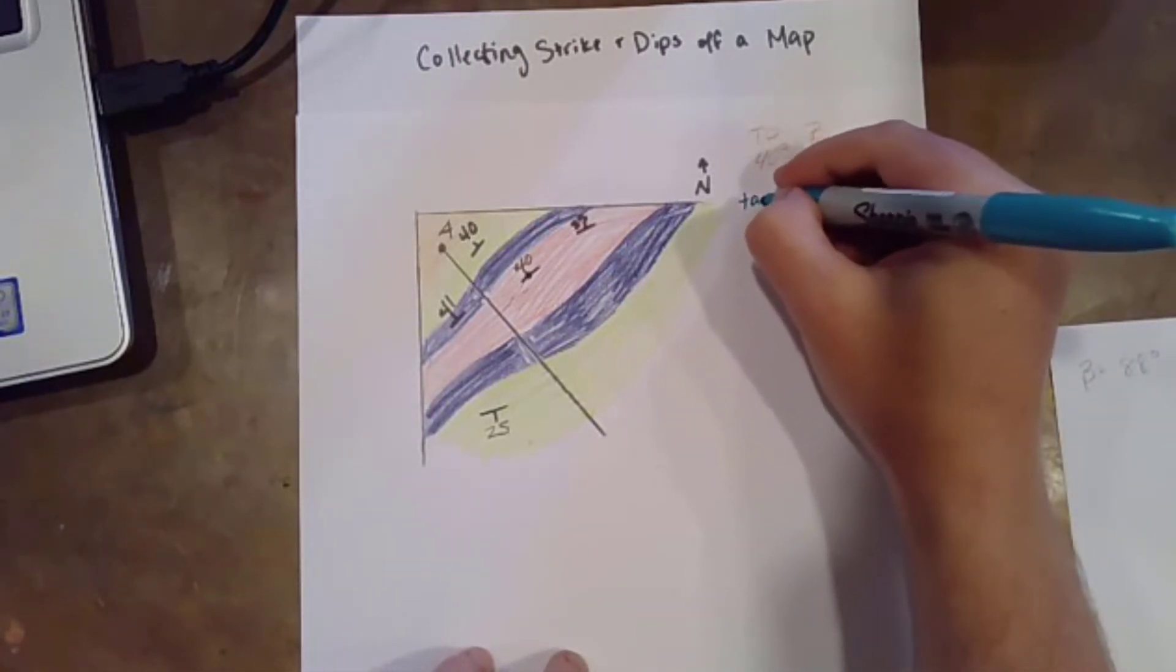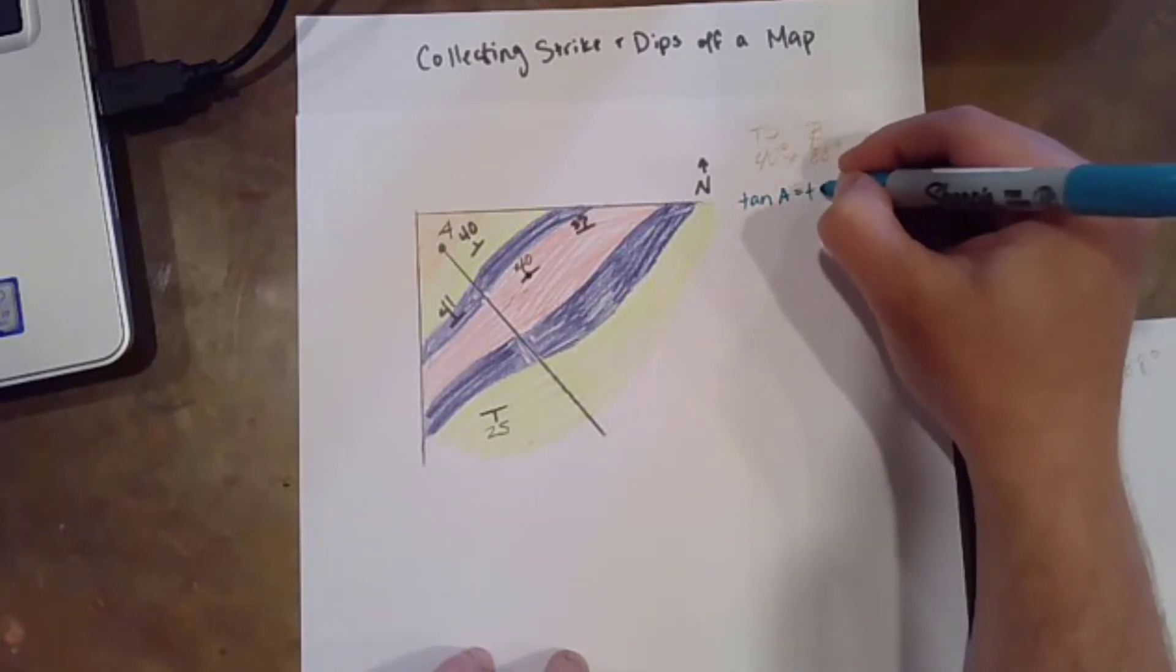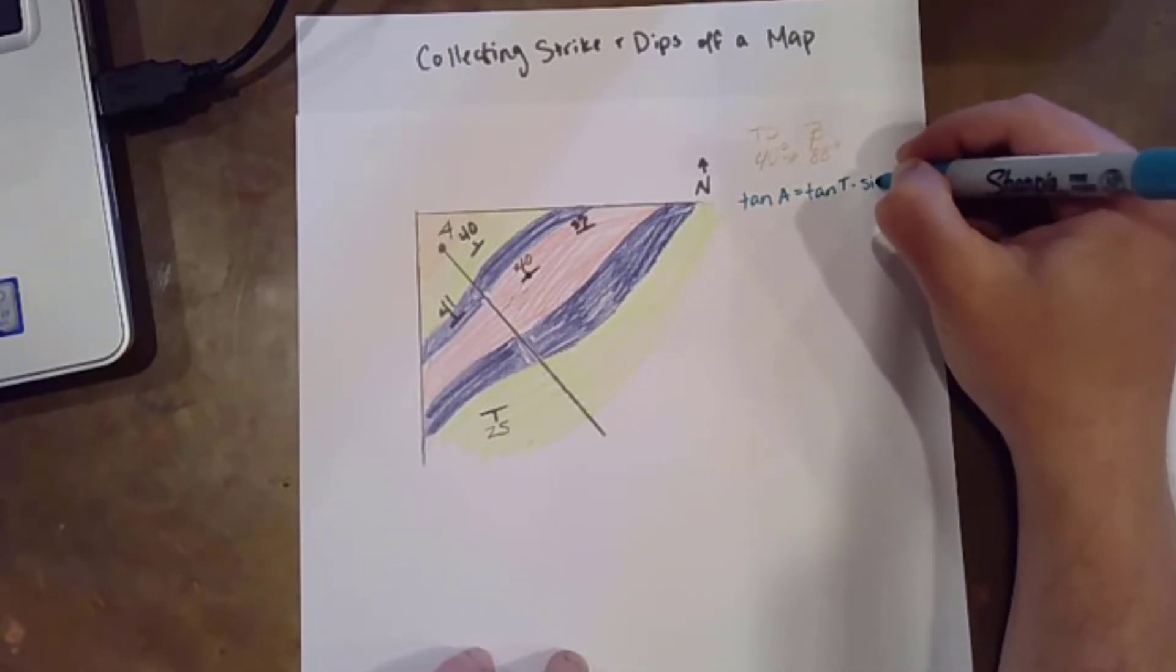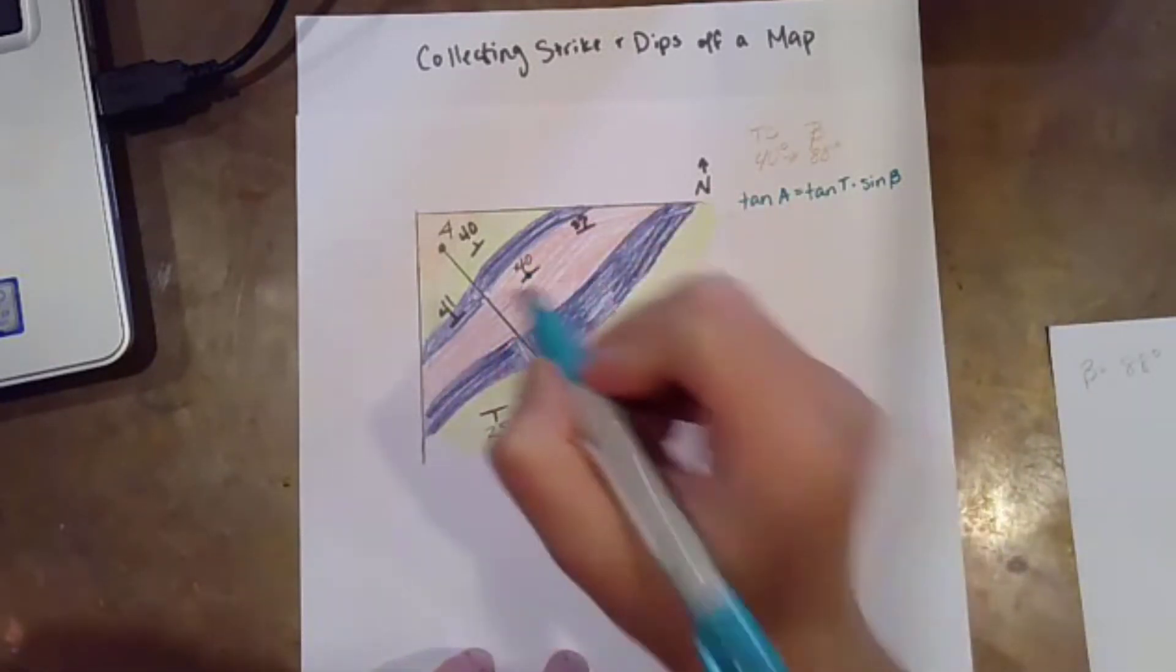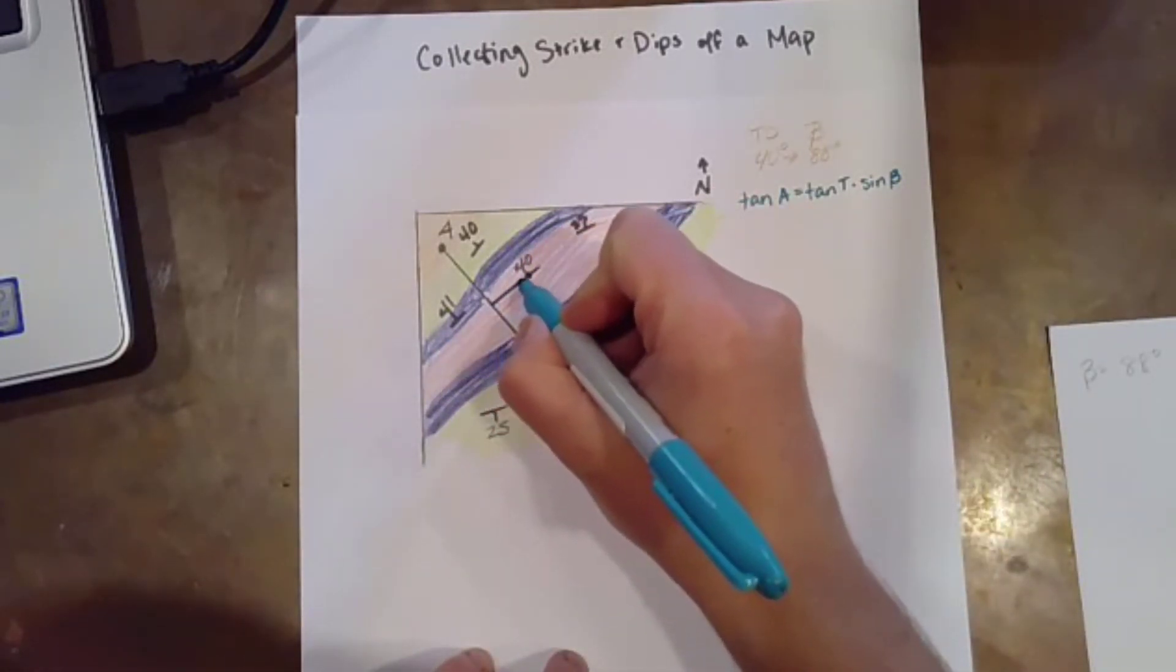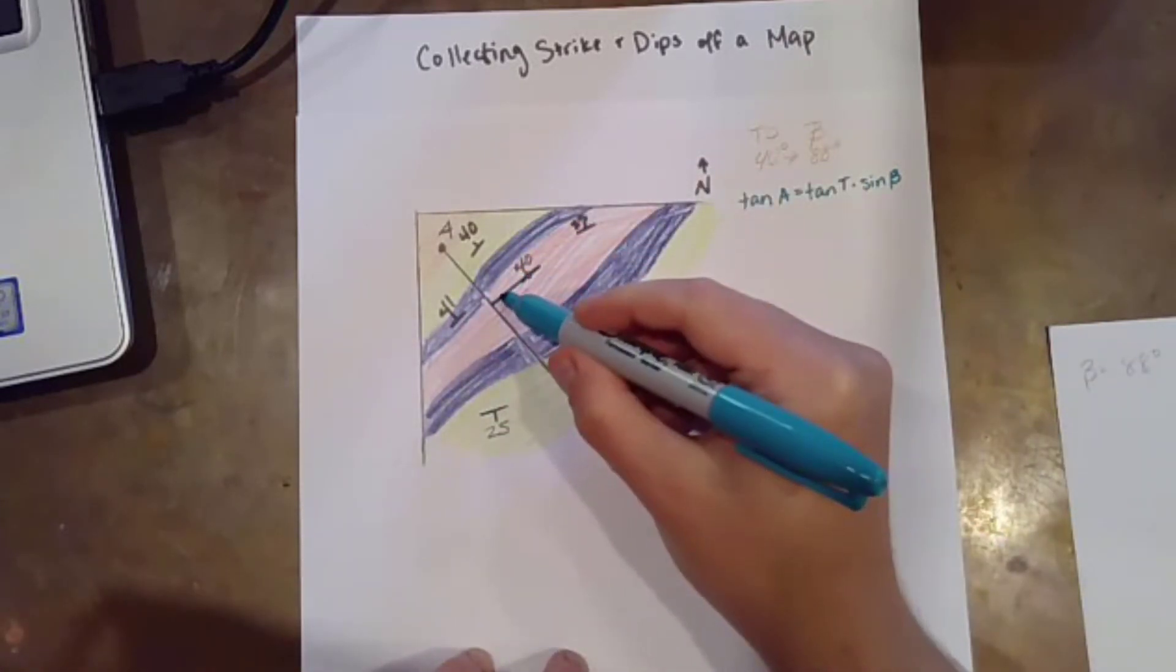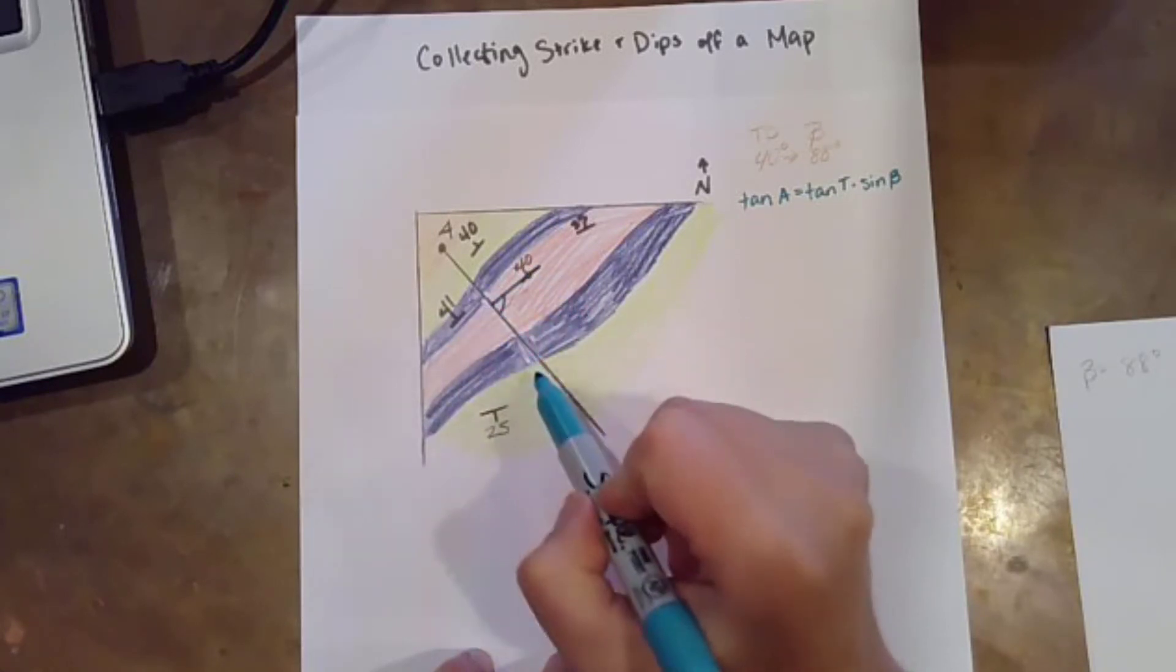Okay, tangent of the apparent dip is going to be tangent of true dip times sine of beta, where beta is the acute angle between strike of the measurement of interest and the line along which you're constructing your cross section.